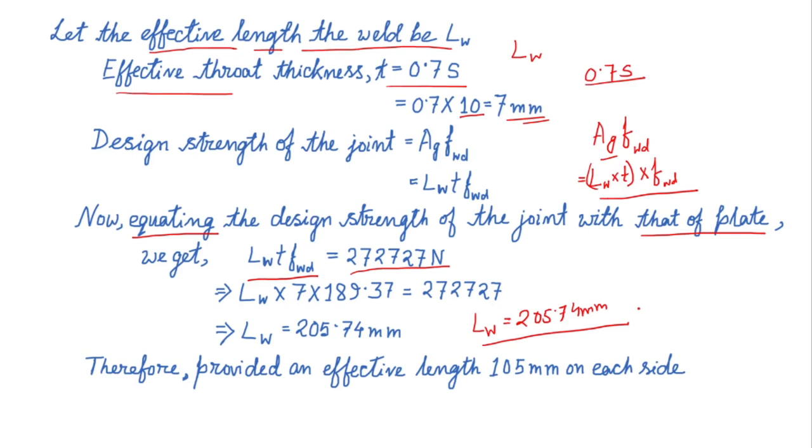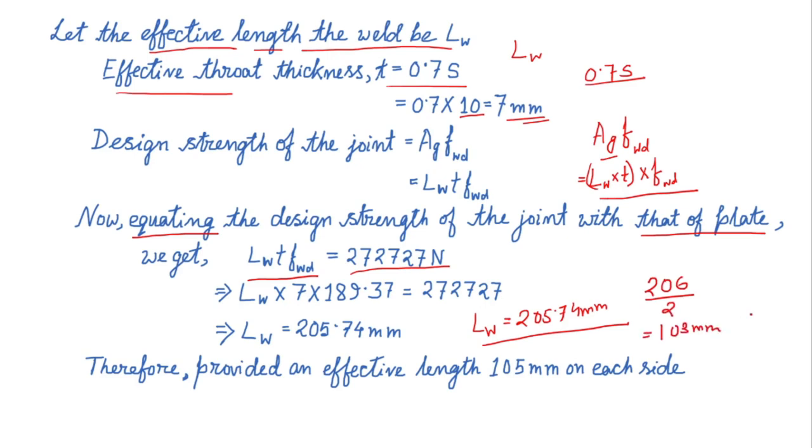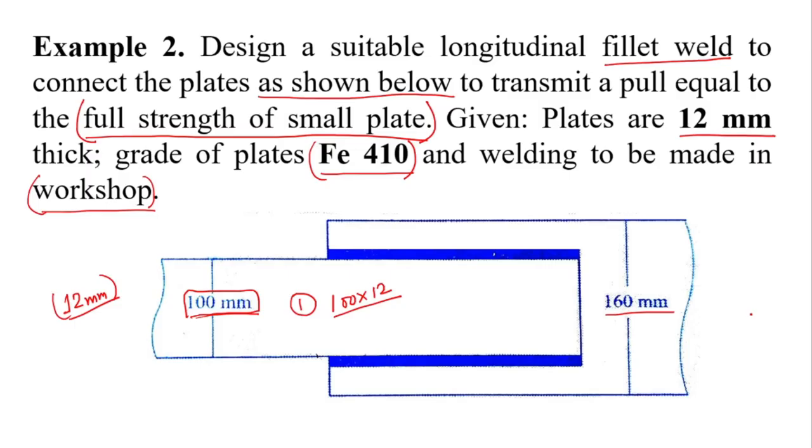So approximately 206. If I divide it by 2, it is 103 mm. So we have to provide at least 103 mm on both sides. This is 103 mm and this is 103 mm. We have to provide at least 103 mm on both sides as a longitudinal fillet weld.